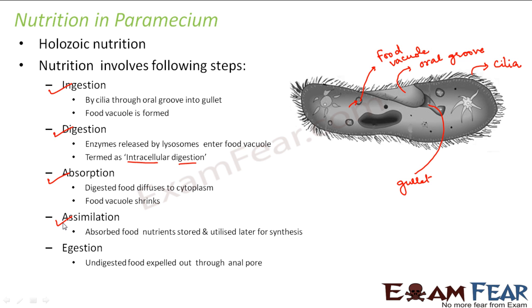For assimilation, the absorbed food nutrients are stored and utilized later for synthesis — same as in amoeba. For ejection, the undigested food is expelled out through the anal pore. Unlike amoeba, where undigested food was expelled from anywhere through the surface, paramecium has a specific anal pore. The shrunken vacuole and the undigested food reach the anal pore, which ruptures to expel them out. So paramecium has specific locations: the oral groove for intake and the anal pore for waste expulsion.